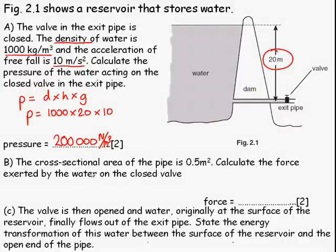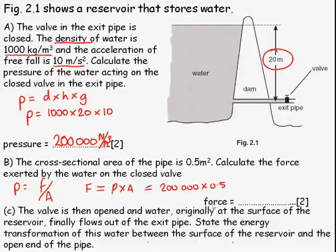Second part B. You have to calculate the force, and you know the pressure from the previous question. You know the area. Pressure is equal to force divided by area. Rearrange the equation by multiplying both sides by area, and cancelling out. And you've got force is equal to pressure multiplied by area. Substitute your numbers in. Answer is in newtons because it's a force, 100,000 newtons.